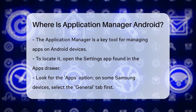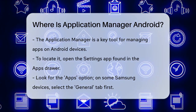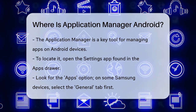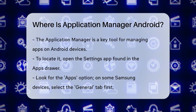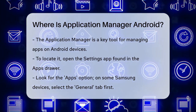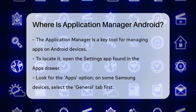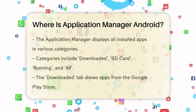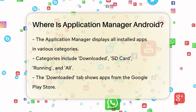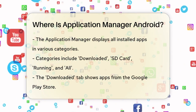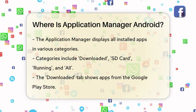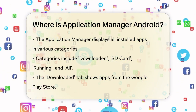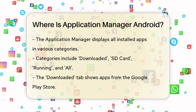To start, you need to open the Settings app. This app is usually found in the Apps drawer, which is the menu that lists all your installed apps. Once you're in the Settings app, look for the Apps item on the screen. On some Samsung devices, you might need to touch the General tab first and then select Application Manager.